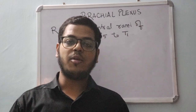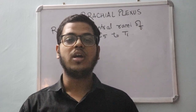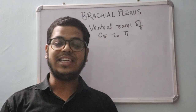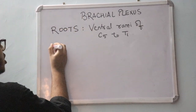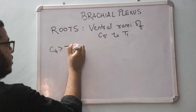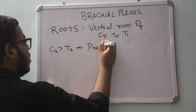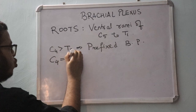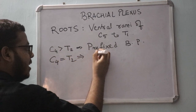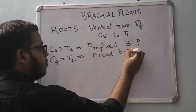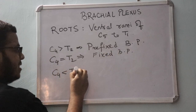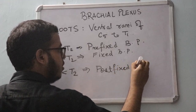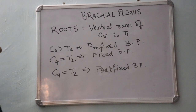The fixed brachial plexus has equal contribution from both C4 and T2. If the C4 contribution is more compared to T2, it is known as the prefixed brachial plexus. If the T2 component is more compared to C4, it is known as the postfixed brachial plexus. So there are three types: prefixed, fixed, and postfixed.